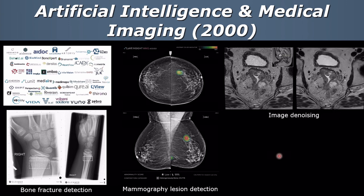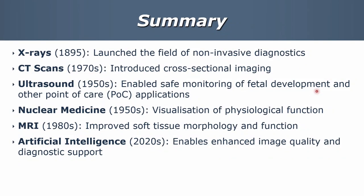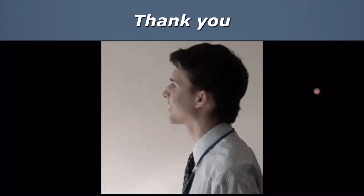Nothing I can say these days without including the role of artificial intelligence in medical imaging — we can do things like detect fractures, look at lesions in the breast, denoise images, or segment tissues. In summary: x-rays launched the field of non-invasive diagnostics; CT introduced cross-sectional imaging; ultrasound allowed safe fetal development and point-of-care applications; nuclear medicine provides physiological function; MRI improved spatial morphology and gave additional functional information; and artificial intelligence is where we're going now — enabling enhanced image quality and diagnostic support.